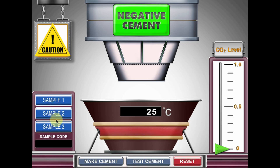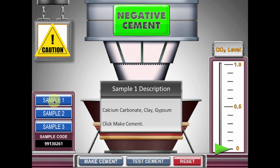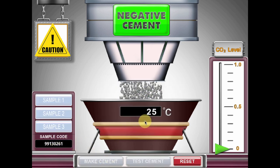Begin the simulation by selecting one of the three samples on the left. Make sure to note and record the sample ingredients and sample code. Next, click Make Cement to heat up the mixture.